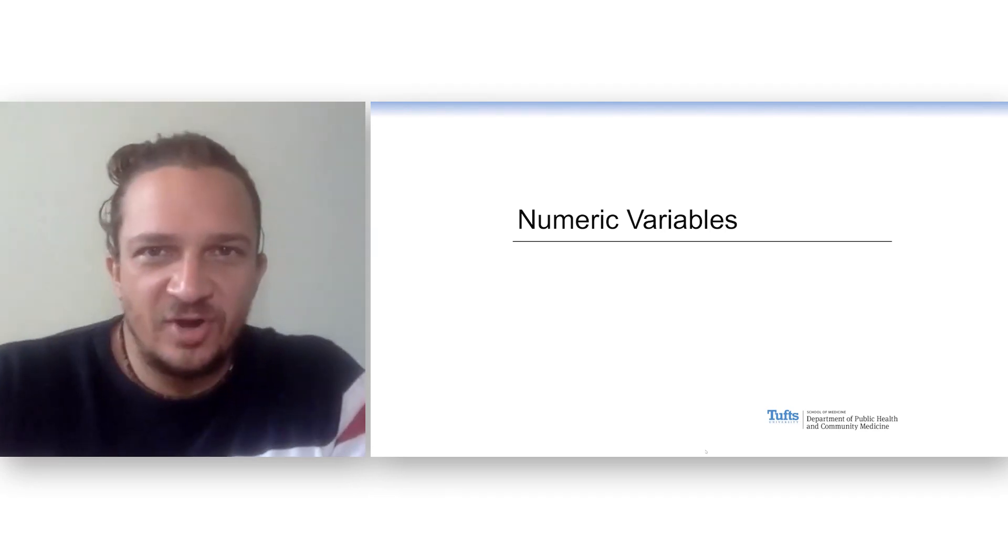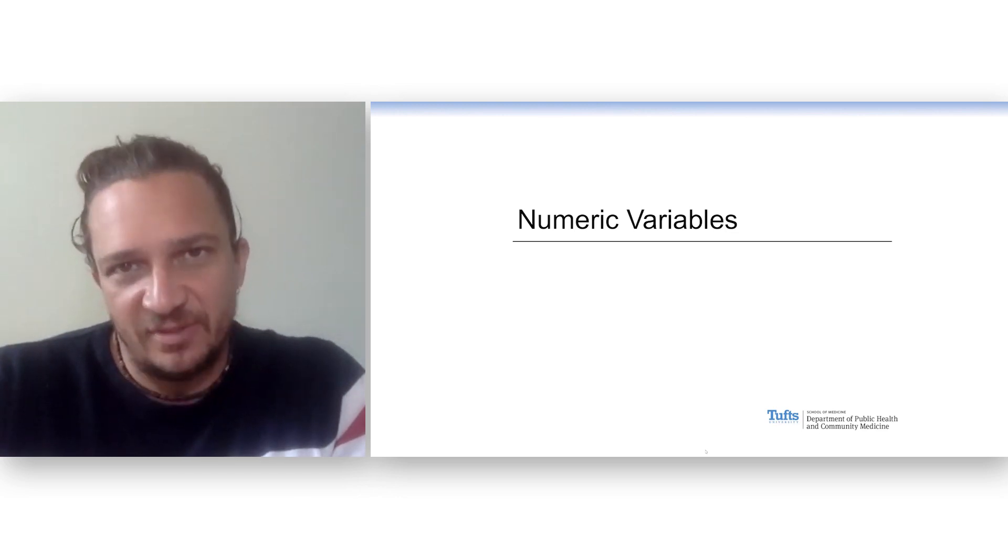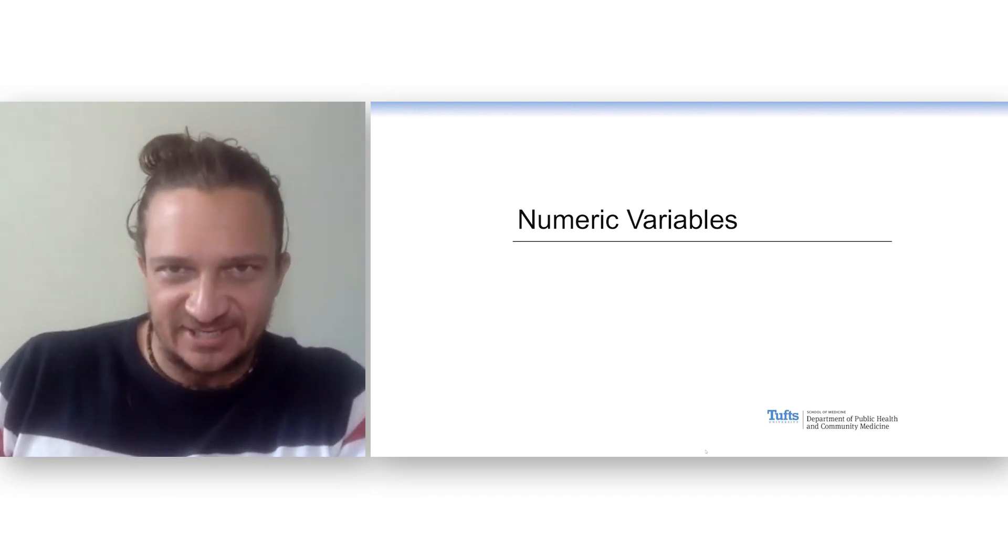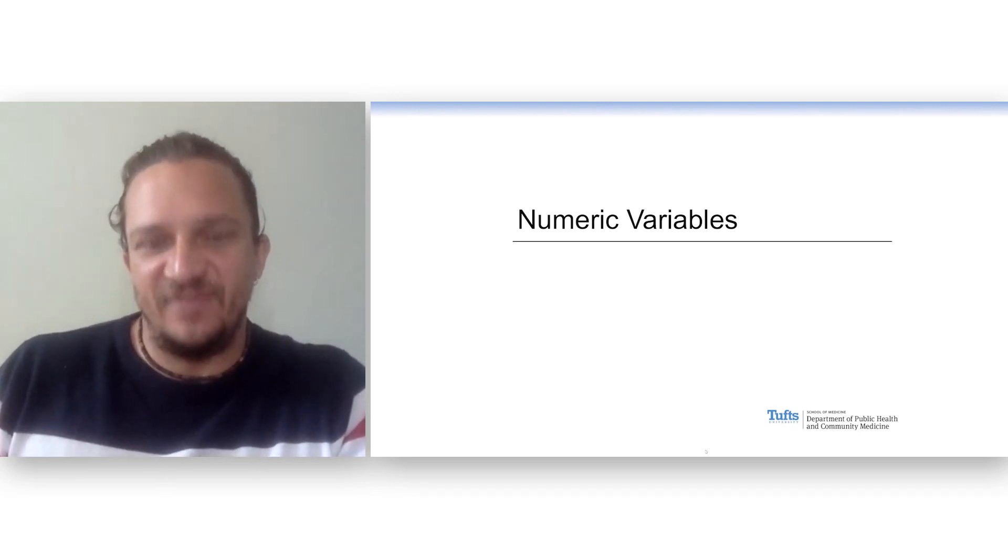We're going to talk now about numeric variables. So again, variables are characteristics that vary between the elements that we're measuring. Numeric variables are important because we can do math on them, and we can start to look for patterns and start to do summary statistics such as the mean and the standard deviation and so on.